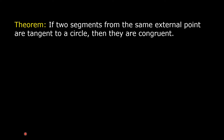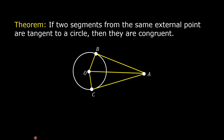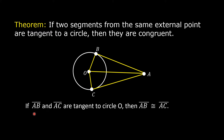If two segments from the same external point are tangent to a circle, then they are congruent. In this figure, according to the theorem, if segment AB and segment AC are tangent to circle O, then segment AB is congruent to segment AC.